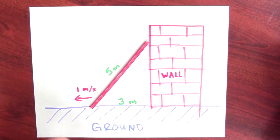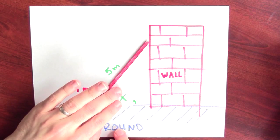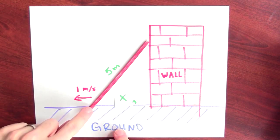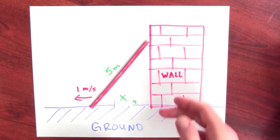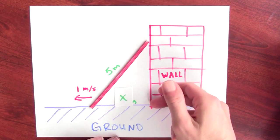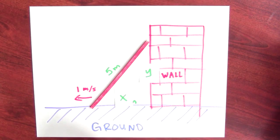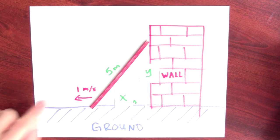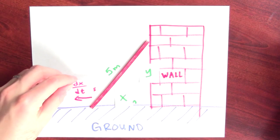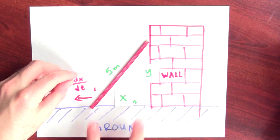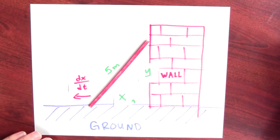So now I'm going to label this. Instead of three, I'll call this distance from the wall to the base of the ladder x. And I'll call this distance from the top of the ladder to the bottom of the wall y. And this speed, the speed with which I'm pulling the ladder away, that's really asking how quickly this distance is changing. So that's dx dt.